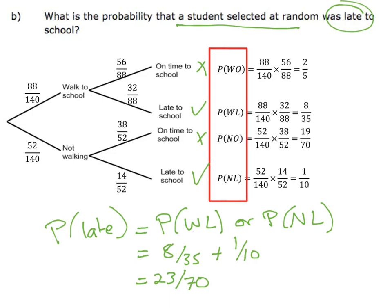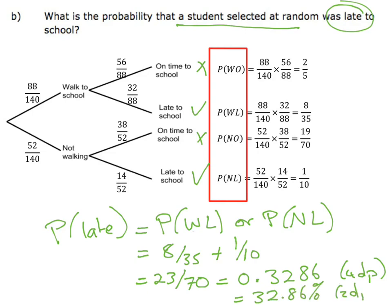If you would rather show that as a decimal, you could write the answer as 0.3286 to 4 decimal places, or if you prefer it as a percentage, 32.86% to 2 decimal places. Any of those are fine — when we talk about a probability it could be a decimal, fraction, or percentage.